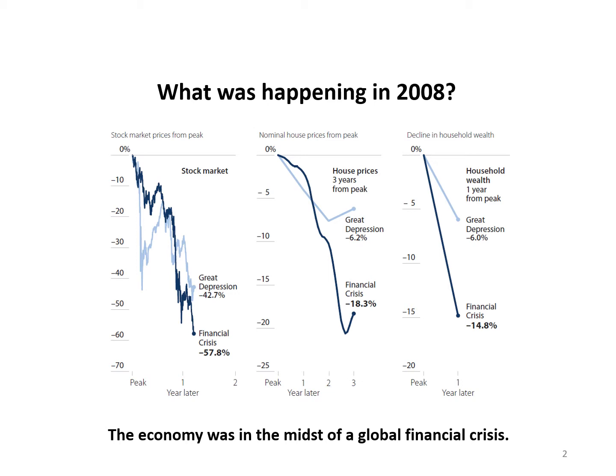And then there was the housing market. After rising rapidly for nearly a decade, housing prices peaked nationally in the summer of 2006 and then fell rapidly. Since much of the wealth of households is composed of their stock market assets and the value of their home, most Americans suffered a large decrease in household wealth.